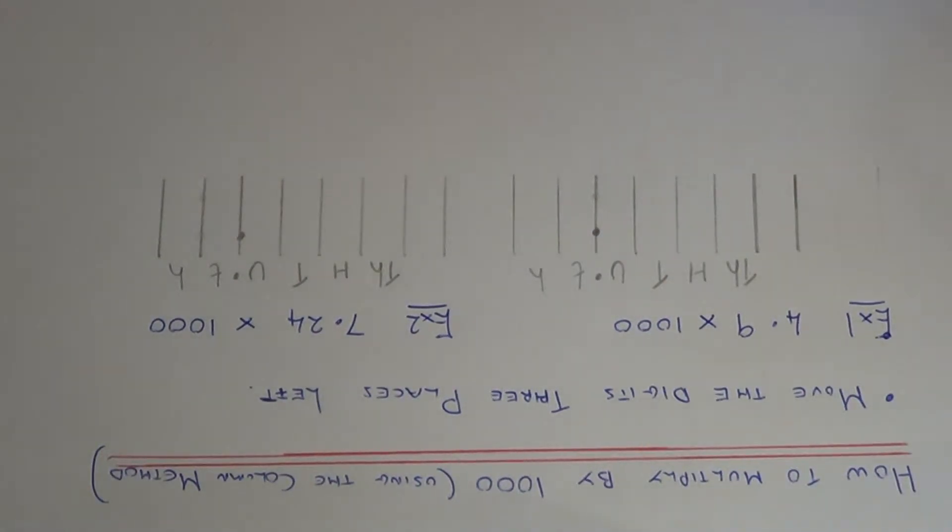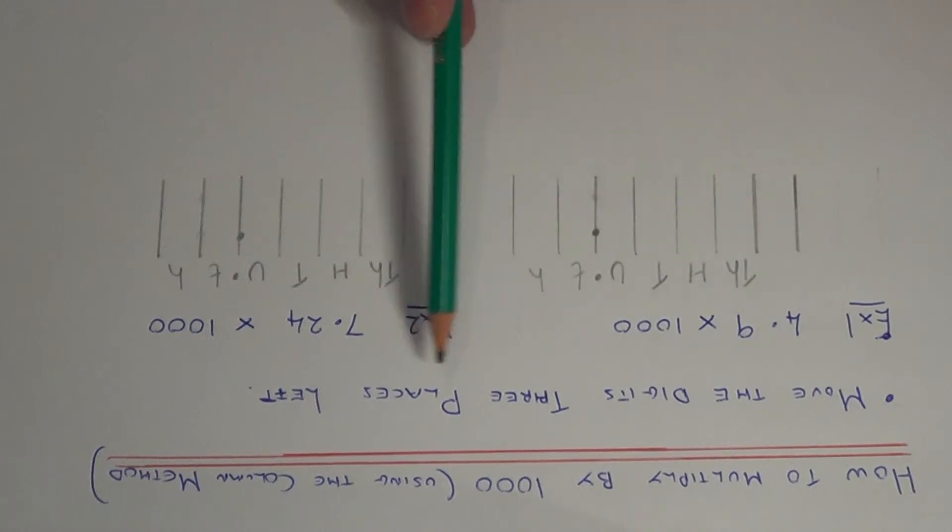Hi, today I'm going to show you how to multiply a decimal number by a thousand using the column method. All you need to do is write the number that you're multiplying by a thousand into the correct columns and you need to move all the digits three places to the left.